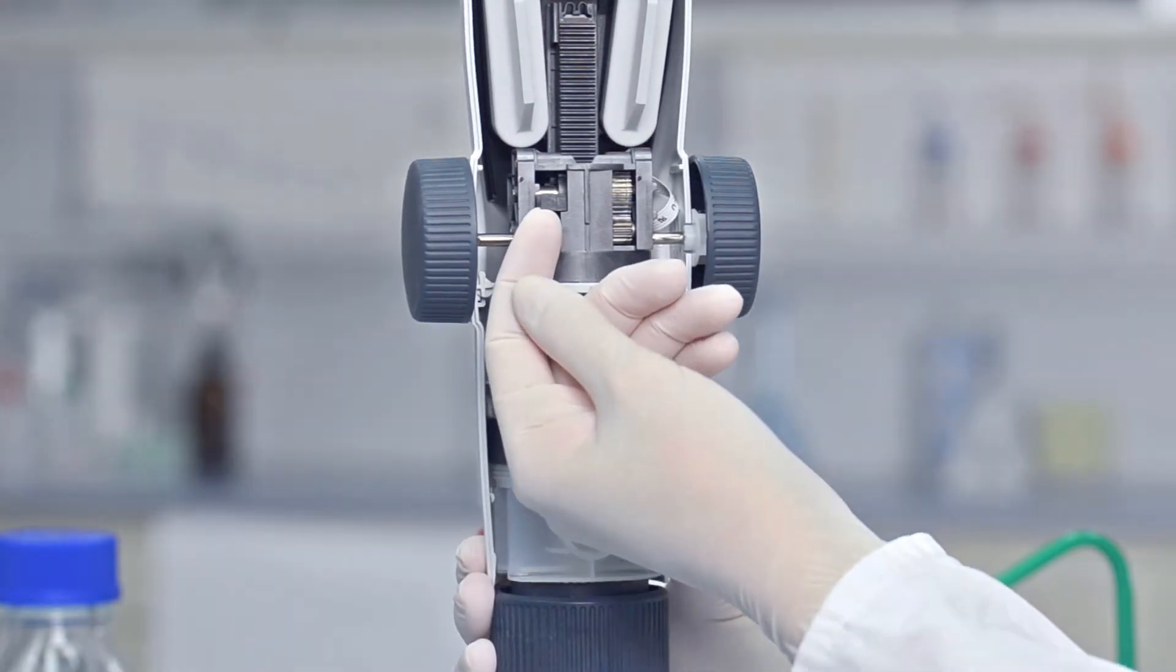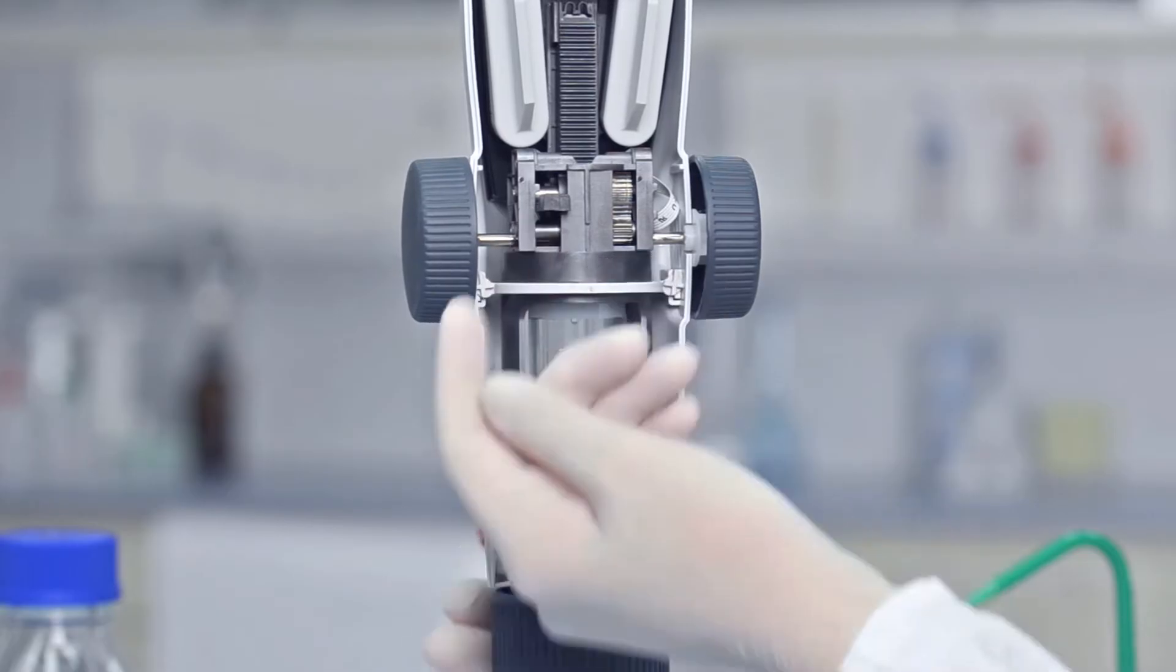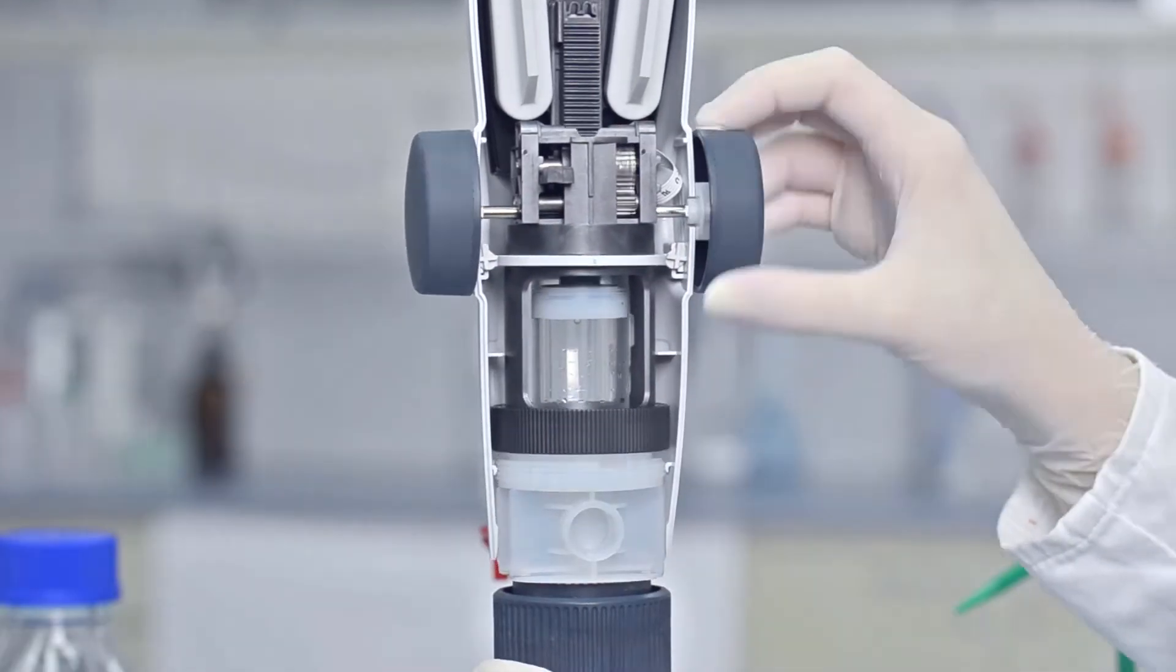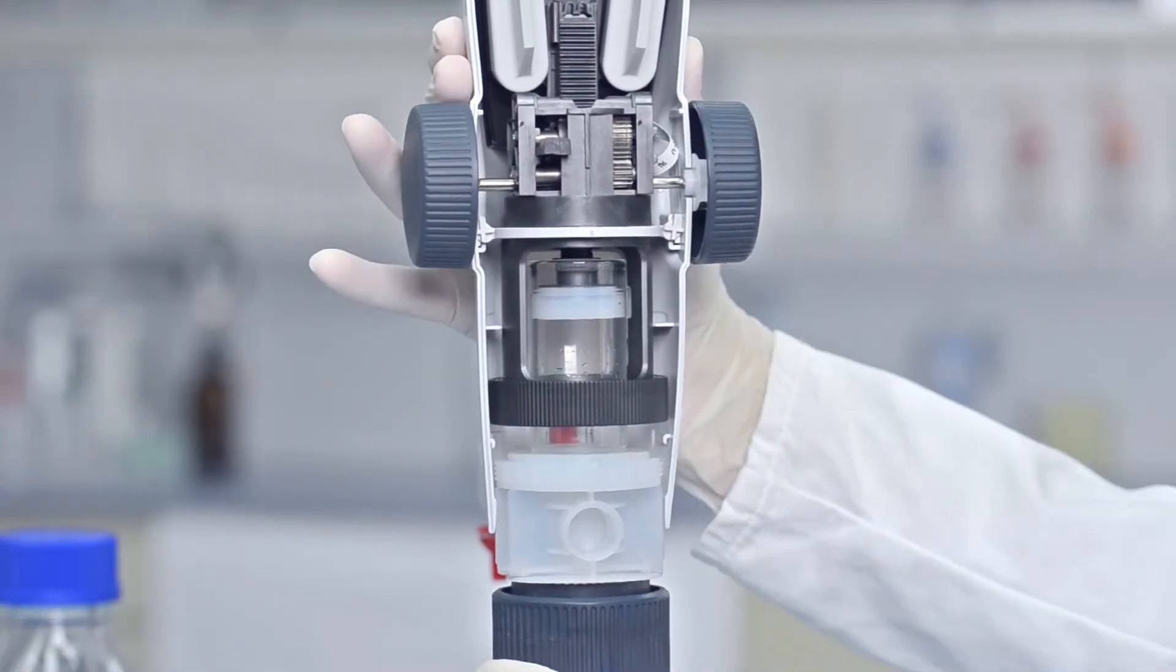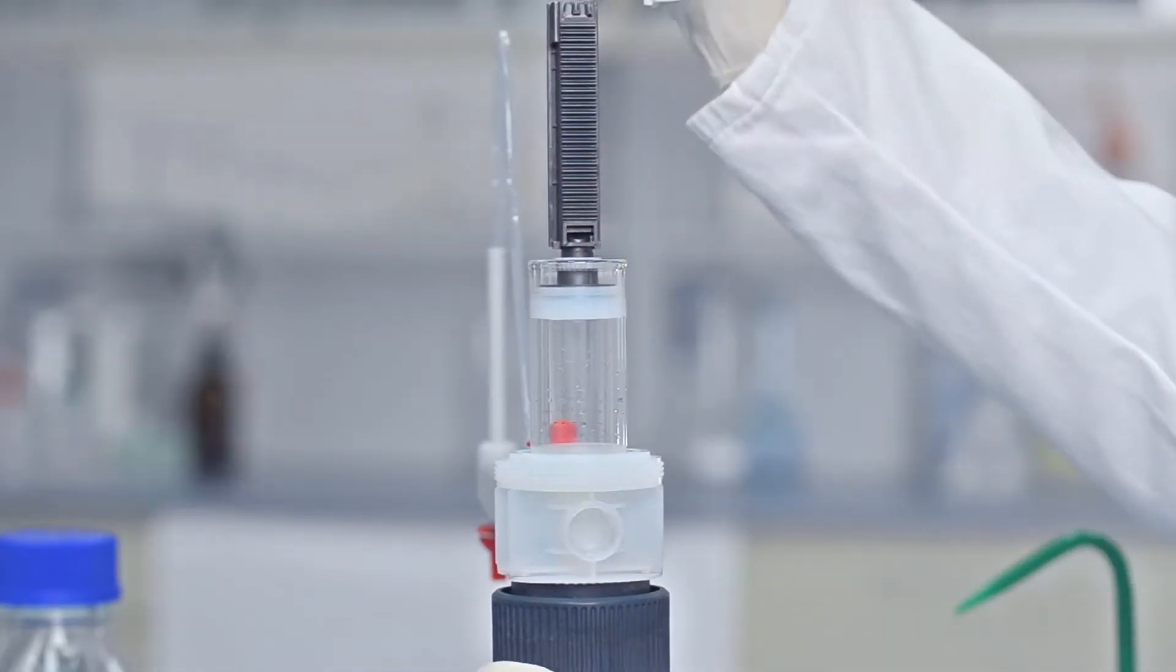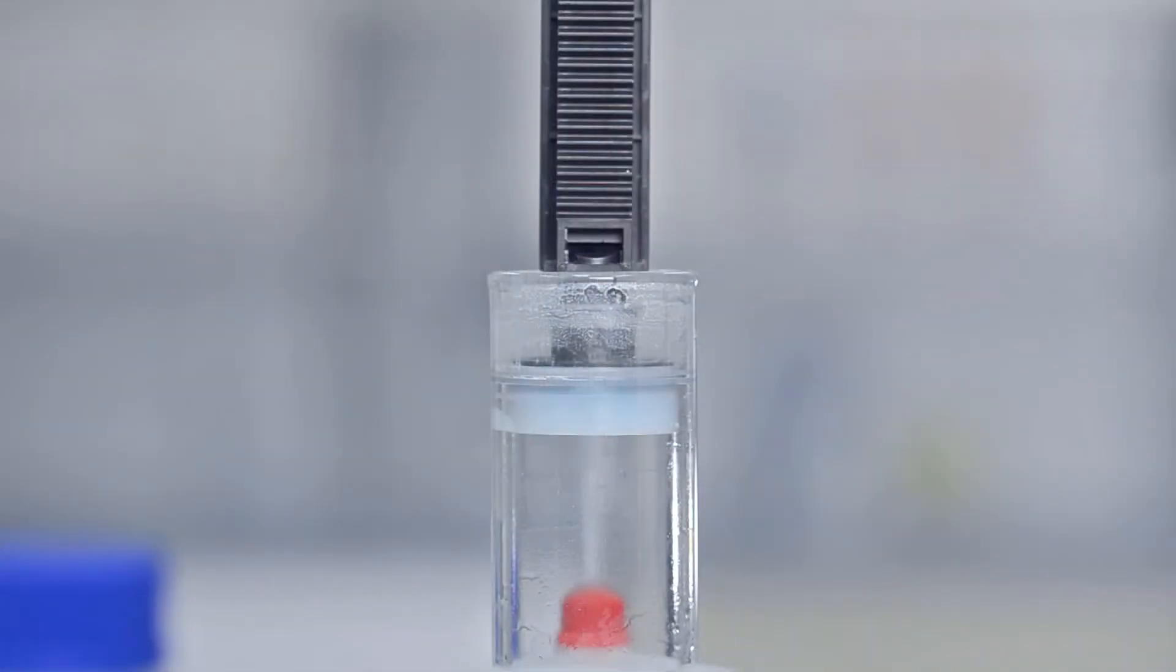Slide out the piston rod locking mechanism to the stop. Turn the hand wheels to raise the top part of the instrument and remove it.